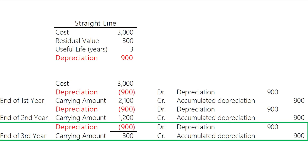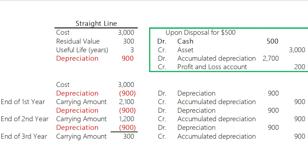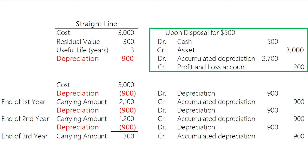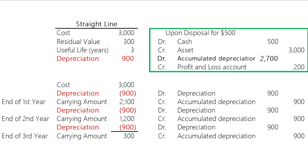Depreciation in the profit and loss account will be the same every year, but the accumulated depreciation is carried forward, so at the end of the third year it will be $2,700 instead of $900. If we sell the asset at the end of the third year for $500, we debit cash by $500, credit the asset by $3,000, debit accumulated depreciation by $2,700 to close that account, and finally credit the profit and loss account by $200 as income.